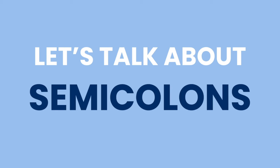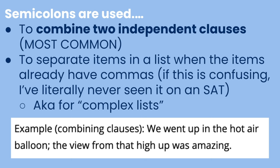Moving on to semicolons. While you can't use a comma to connect two independent clauses, this is exactly what the semicolon is for. For instance, 'we went up in the hot air balloon' and 'the view from that high up was amazing' are both independent clauses. They can stand alone, be joined with a coordinating conjunction and comma, or be separated with a semicolon. Semicolons can also be used to separate items in a list when those items already contain commas — these are known as complex lists.